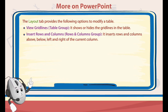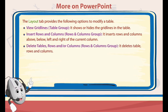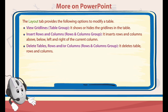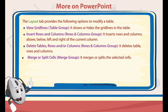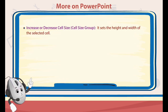4. Insert Rows and Columns — Rows and Columns group. It inserts rows and columns above, below, left and right of the current column. 5. Delete Tables, Rows and/or Columns — Rows and Columns group. It deletes table, rows and columns. 6. Merge or Split Cells — Merge group. It merges or splits the selected cells. 7. Increase or Decrease Cell Size — Cell Size group. It sets the height and width of the selected cell.